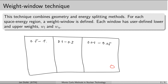Because the technique treats all neutrons, not just those passing between segment boundaries, the weight window technique has a bigger potential than the geometry splitting technique. However, it is more difficult to use because you have to decide at least two parameters for each geometry segment.